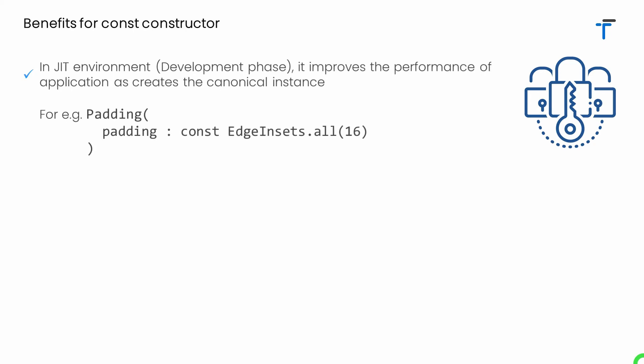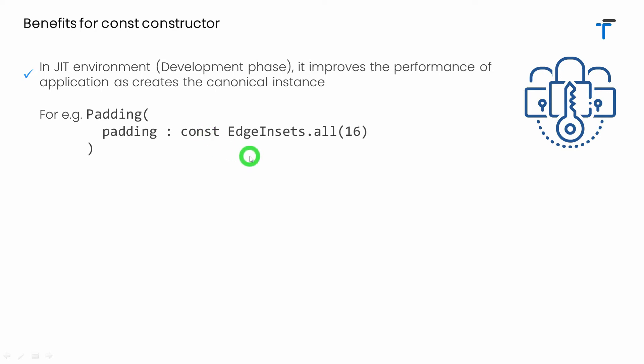In the case of JIT — Just In Time compile environment, which is basically the development phase — the const constructor improves the performance of the application and creates canonical instances. For example, whenever we create a Flutter application we use the padding widget with EdgeInsets.all or EdgeInsets.symmetric many times. Consider that in the application we're using EdgeInsets.all with 16 pixels padding 100 times. If we don't use const, the application will try to create 100 different instances, which will definitely degrade performance.